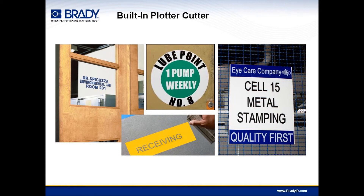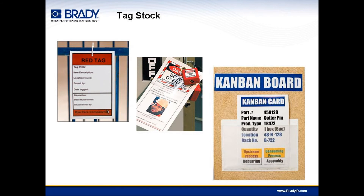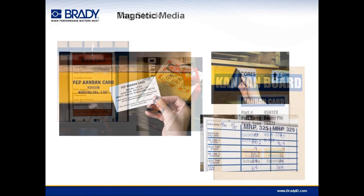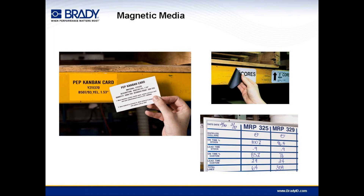The cut text feature is also useful for creating professional-looking door signs and large placards. When used in combination with the stencil font in Markware, it can also be used to create stencils for painting highly durable markings on walls and floors. The GlobalMark can also print directly to a flexible tag stock, great for creating tags for inspection and safety purposes, as well as printing custom Kanban cards on demand. The GlobalMark prints directly to magnetic media, which is useful for warehouse applications and production control boards. A magnet on the rack can serve as the Kanban card, which gets removed and sent up the production stream whenever stock needs to be replenished.